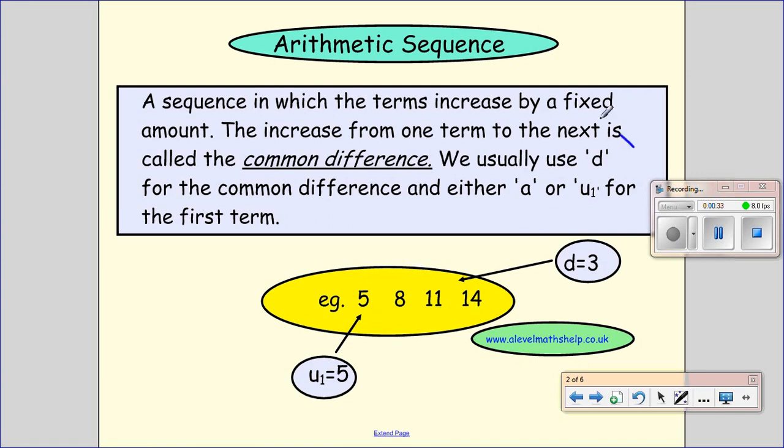So we use D as our common difference and you also need to know that the first number or the first term in your sequence is given as A or U subscript 1, so U with a little 1 next to it. For most of our formulas, we use A for the first term.